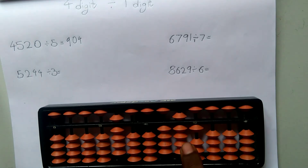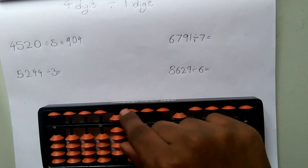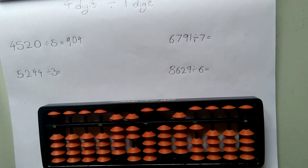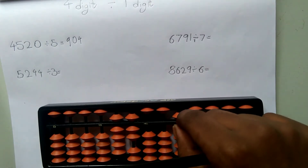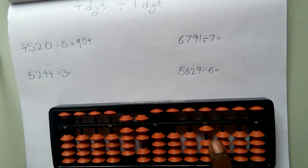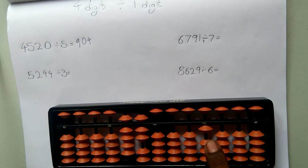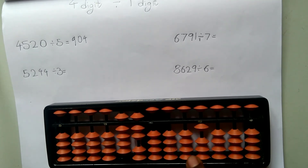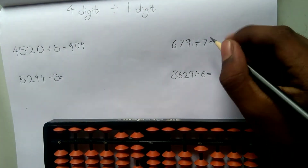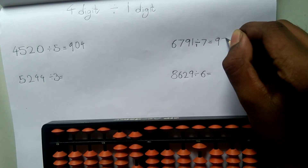Now let's include the 10s rod as well — it becomes 49. 7 sevens are 49. Since I included the 10s rod, the answer is also represented on the 10s rod. 7 sevens are 49, so I subtract 49. Now the next digit: it's 1. 1 is less than 7, so we cannot use it. But there are no more digits after 1, so we use 0. So our answer so far is 970 and our remainder is 1. Let's write 970 as our quotient.